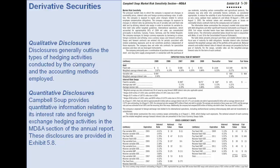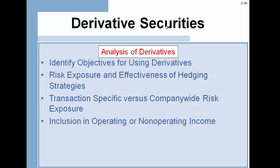When analyzing derivatives, you want to identify the objectives of why the company is using them, assess the risk and exposure of their hedging strategies, determine the company-wide risk, and check whether gains and losses are included in operating or non-operating income. Some companies really avoid derivative securities while others, like those in the oil and gas industry, really embrace them. You should read through disclosures — both qualitative non-numerical and quantitative numerical disclosures — relative to the particular business you're analyzing.